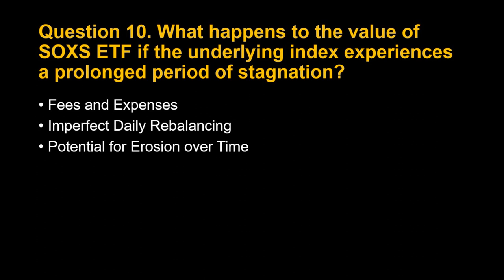Example: Imagine the expense ratio of SOXS is 1% annually. If the index remains perfectly flat for a year, SOXS would lose 1% of its value due solely to fees, even though it's not directly aiming for a positive return in a stagnant market. 2. Imperfect Daily Rebalancing: SOXS relies on daily rebalancing to maintain its targeted leverage ratio of –3x the daily return of the index. During periods of minimal price movements, the daily rebalancing process might introduce minor tracking errors, causing SOXS to deviate slightly from its intended –3x inverse return, even if the index remains perfectly flat.